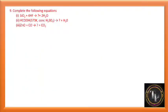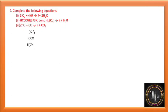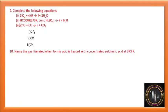Complete the following reactions. SiO2 + 4HF gives SiF4 + 2H2O. Silicon dioxide reacts with HF to give silicon tetrafluoride. HCOOH is formic acid (metanoic acid). At 373 K with concentrated sulfuric acid, formic acid liberates CO (carbon monoxide). ZnO + CO gives Zn + CO2. Name the gas liberated when formic acid is heated with concentrated sulfuric acid — the answer is CO, carbon monoxide.